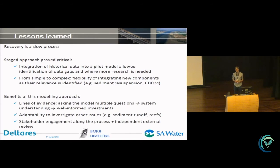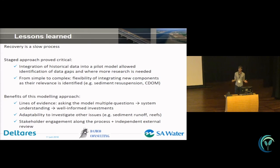An audience member added context: SA Water is currently deciding whether to invest around half a billion dollars in a new treatment plant at the northern site. The scale and type of plant being considered is being informed by this model — so it could save a lot of money, but also save and restore habitat. If water quality improves enough, it could restore up to 5,000 hectares of seagrass along that coastline. These are very valid trade-offs they're trying to make, and this kind of evidence is helping them make the right choice. The session chair then thanked all speakers and closed the session.